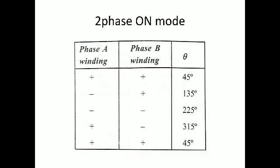Now consider this. When I give positive power supply to both windings — A1 and B1 as inputs — the rotor lies between the A and B windings, which is 45 degrees. The next step: I give reverse current to A and positive current to B. The rotor occupies the opposite direction between A and B, which is 135 degrees.